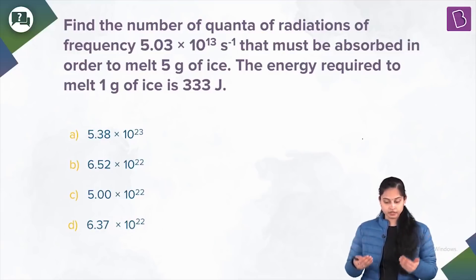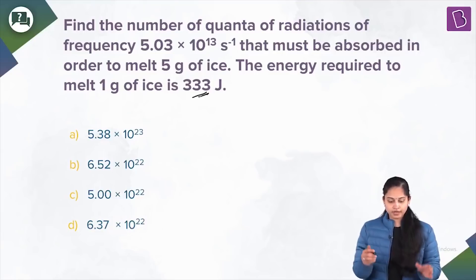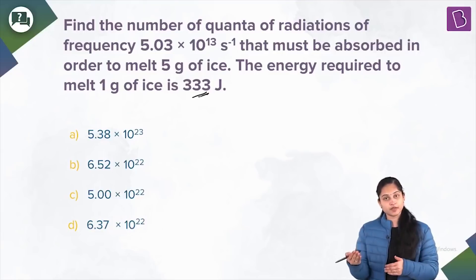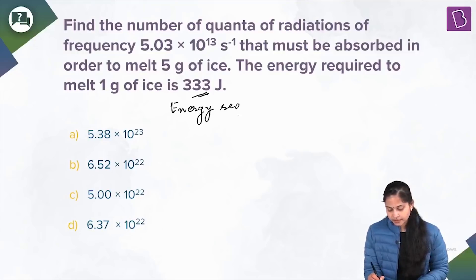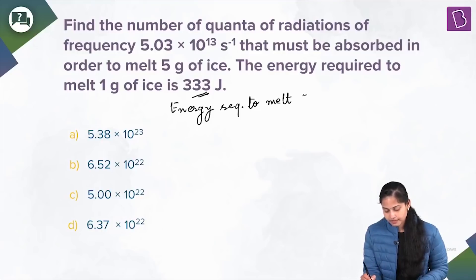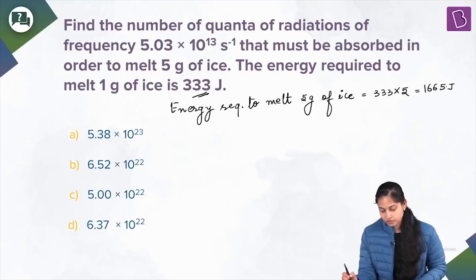We are given the energy required to melt 1 gram of ice, which is 333 joules. So, energy required to melt 5 grams of ice equals 333 multiplied by 5, which equals 1665 joules.